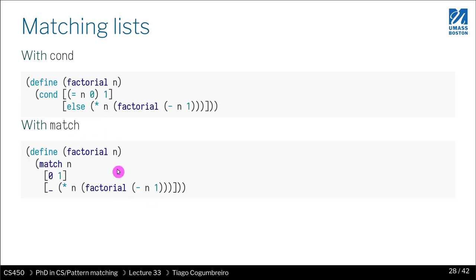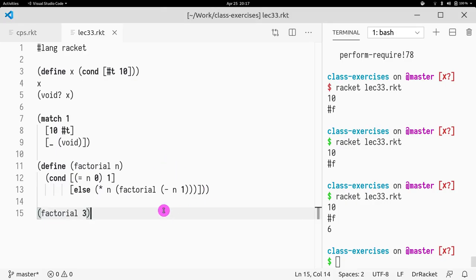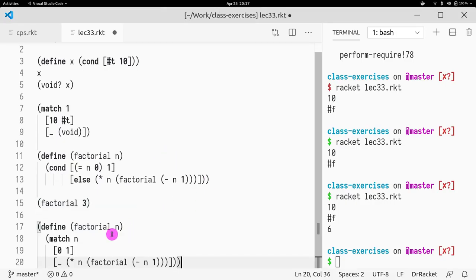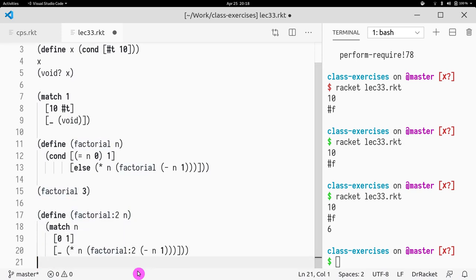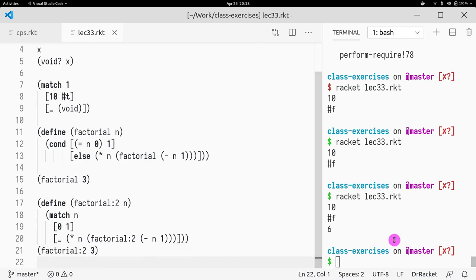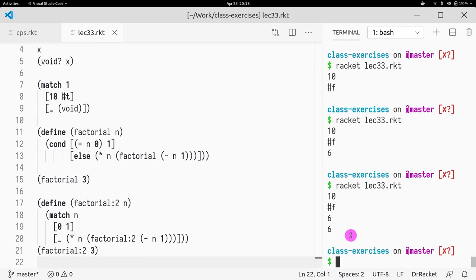But if I were to write this with a match, you can just say if it's zero return one, otherwise return n times factorial, which is, you know, you avoid doing this equals, which is fewer opportunities for a mistake, right? So you're just saying if n is zero then return one, otherwise return this. If I were to write this, I do version two, I get exactly the same value.